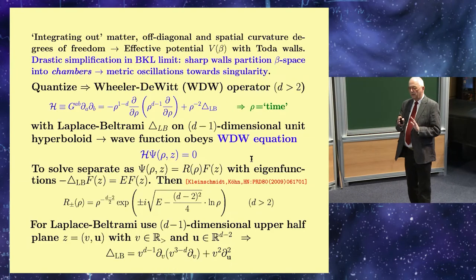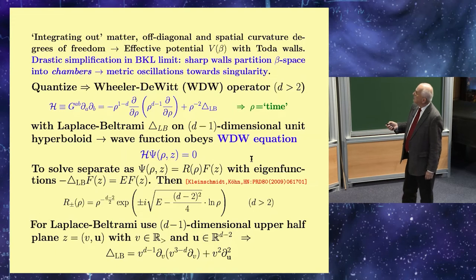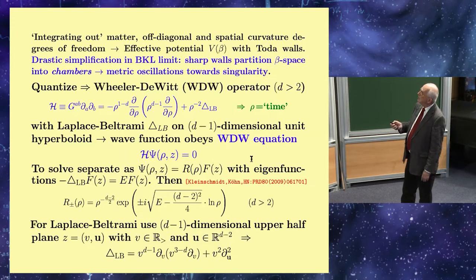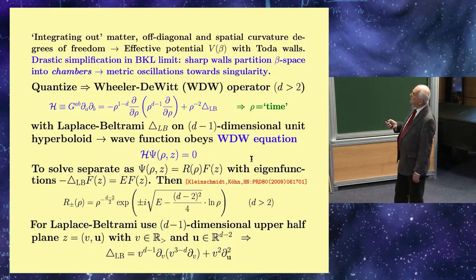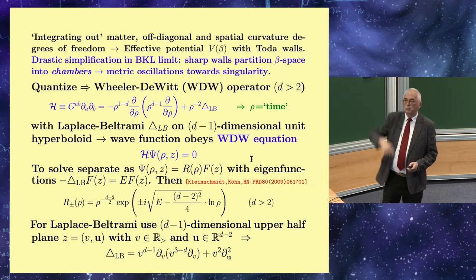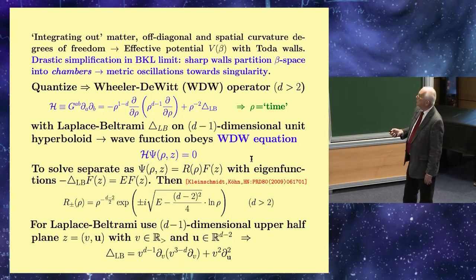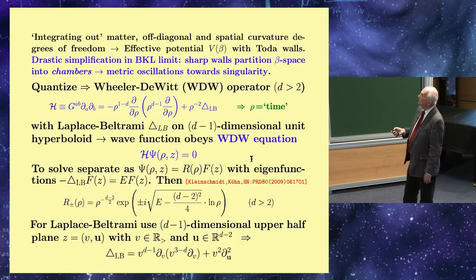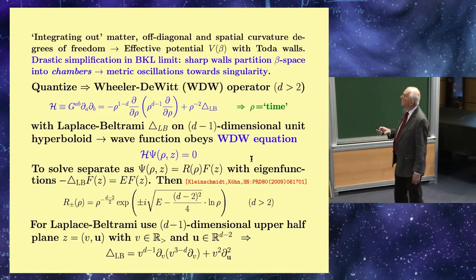Now the effect of the matter degrees of freedom is very complicated, but there's a crucial simplification in the BKL limit which you can study by integrating out matter, off-diagonal curvature, and so on degrees of freedom. At the end of the day, this free motion, relativistic motion, is modified by potential. In the limit toward the singularity, these potentials become sharp walls. As a result, this particle moves on light-like lines and bounces off the walls of this chamber formed by these sharp walls.